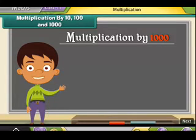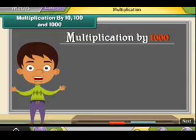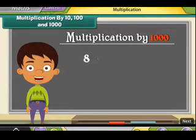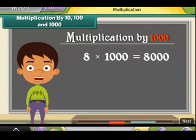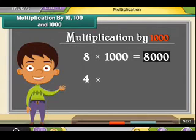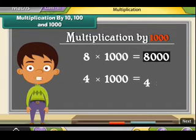When we multiply a number by a thousand, we add the three zeros in the thousand to the right of the number to get the result. Let us multiply eight by a thousand: add three zeros to the right of eight to get the result as eight thousand. By the same logic, four multiplied by a thousand is four thousand.